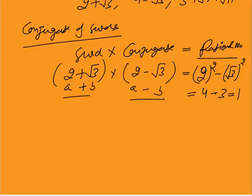You know that 1 is a rational number. We multiplied this surd with a conjugate irrational number and got a rational number. So simply saying, a surd and its conjugate must give you a rational number.